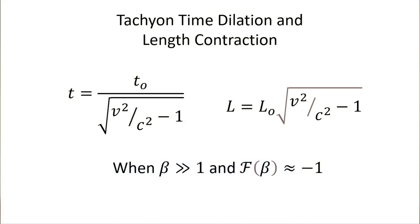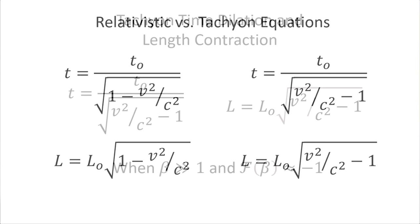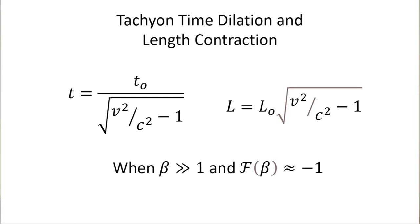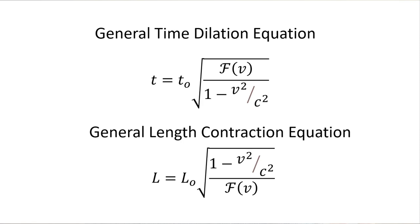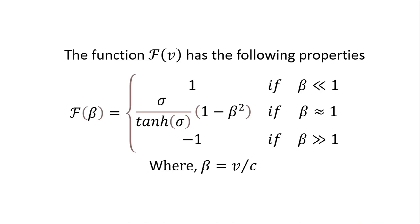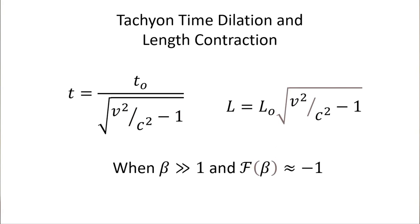For a faster-than-light vehicle, I'll call these the tachyon time dilation and tachyon length contraction. The equations look very similar to the relativistic ones, except in the denominator the warp factor is reversed: instead of one minus the warp factor, it's now warp factor minus one. This approximation is obtained by assuming the warp factor is much greater than one and that the step function switches from one to minus one, reversing the order of the two factors. A similar reversal applies to the length contraction equation.